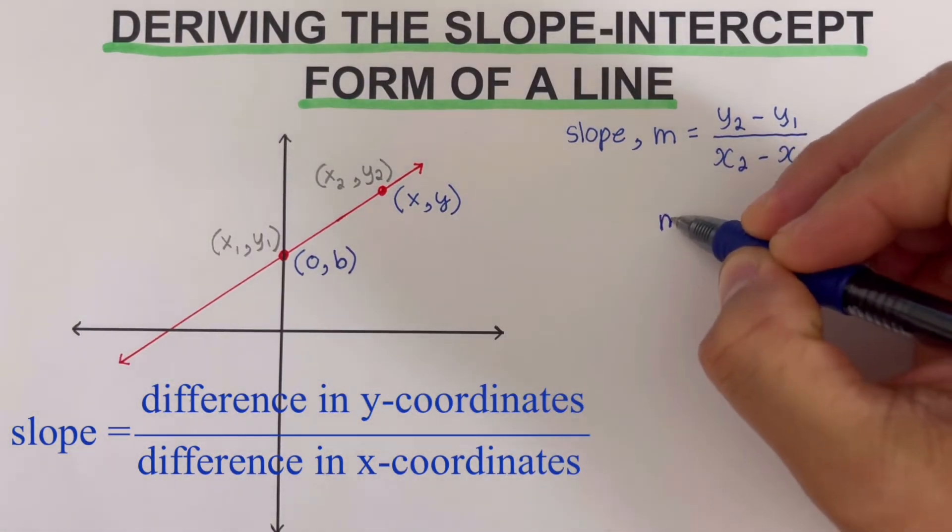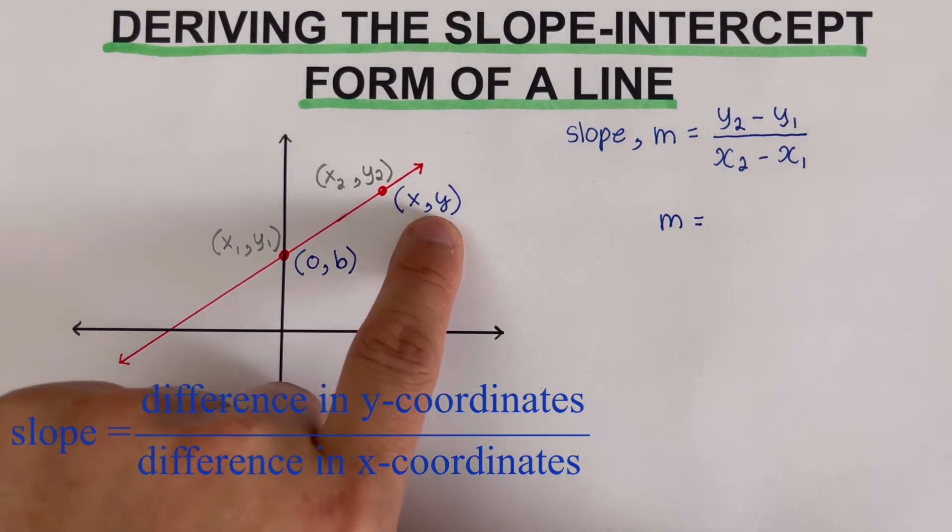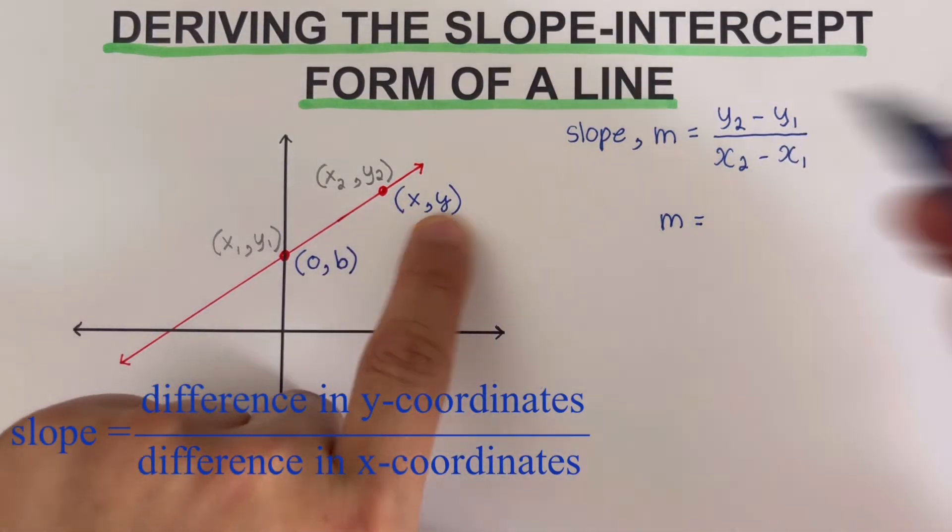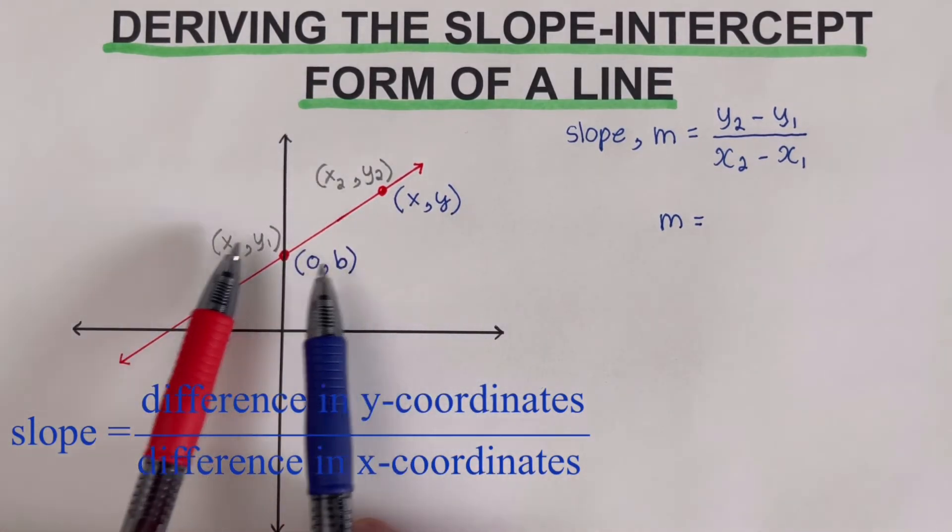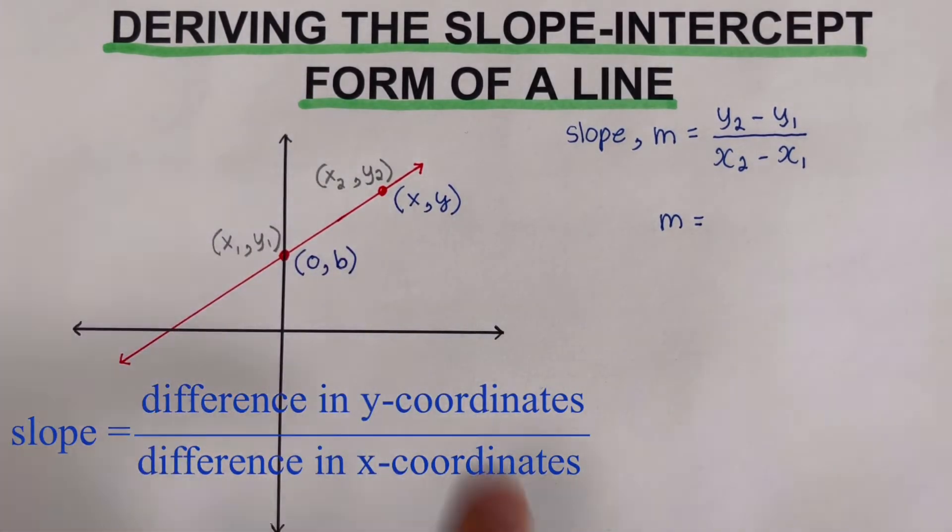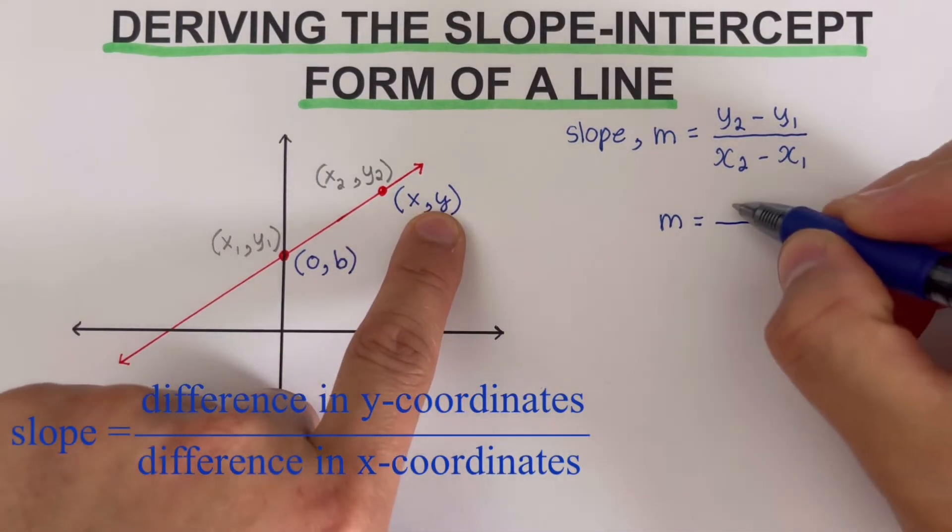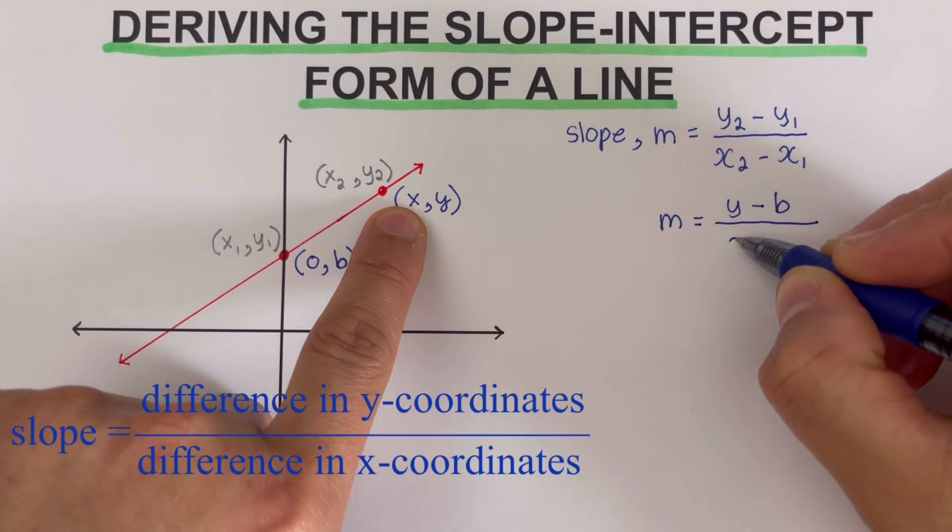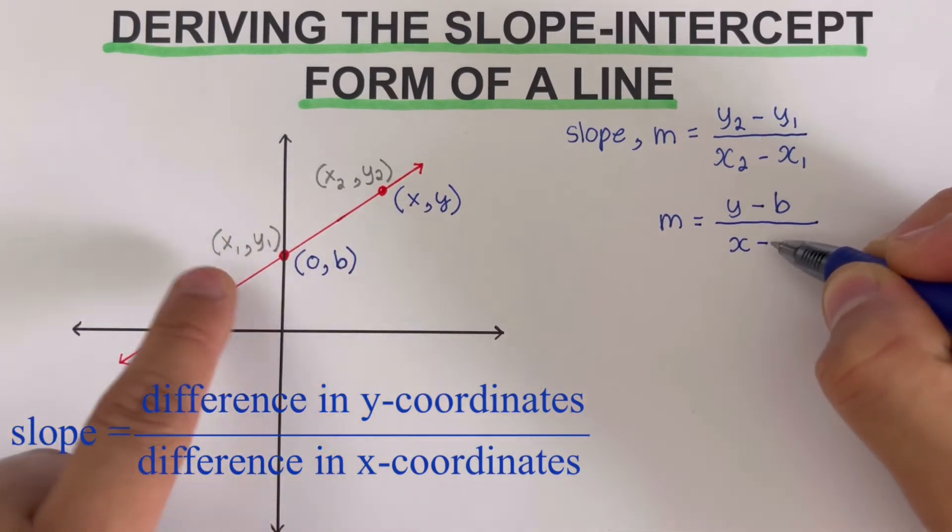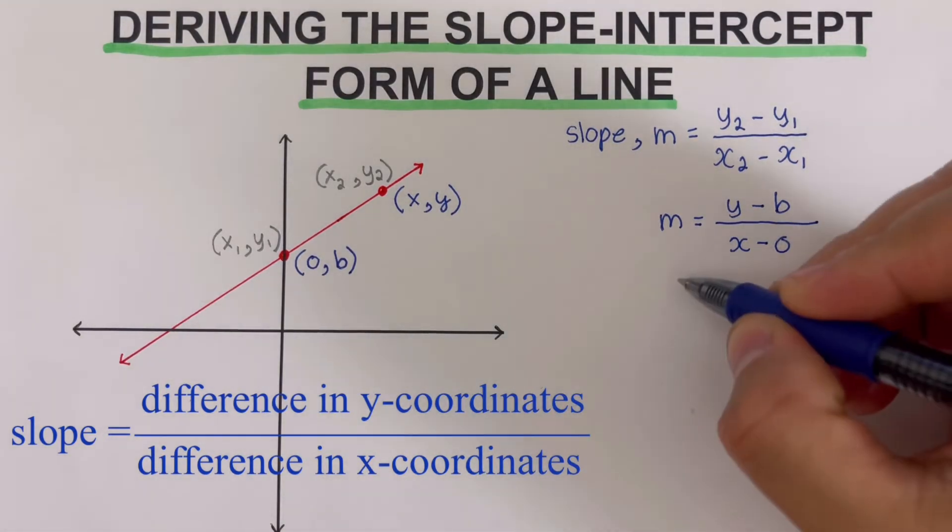So this would come out, m is equal to our y sub 2 matches up with y. So these two are a match. So we go ahead and write y sub 2 is actually equal to y minus our y sub 1 is b, and our x sub 2 is x minus our x sub 1 is 0. So we can simplify this further.